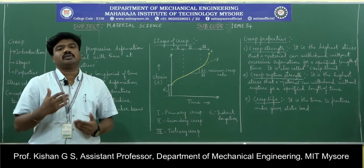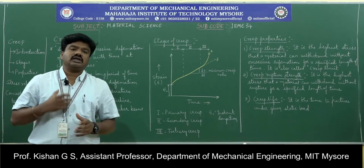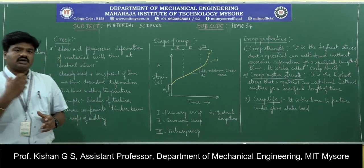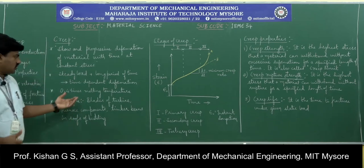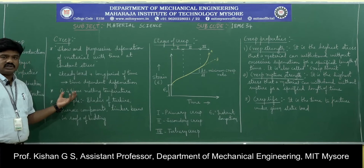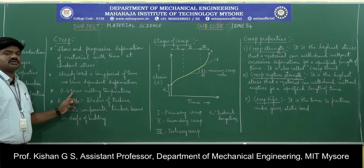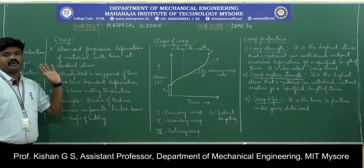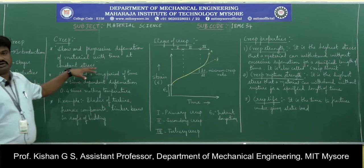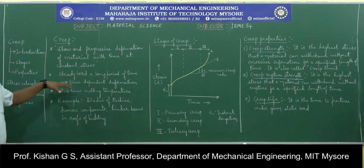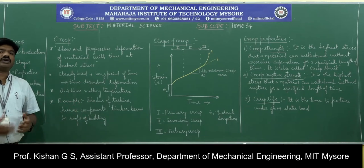The condition of creep is taken into account at a very high temperature range. The temperature at which creep is assessed is 0.4 times the melting temperature. We can assess the behavior of creep at different conditions by considering different examples.